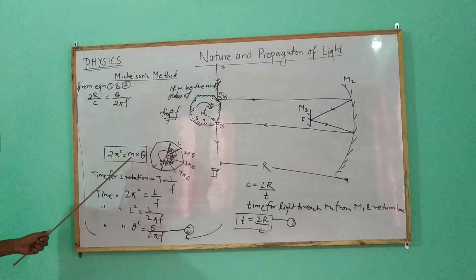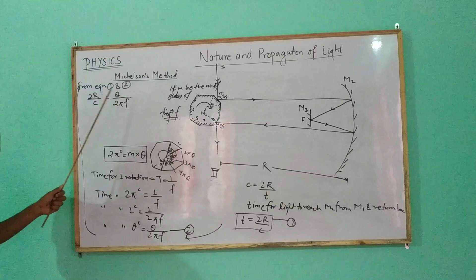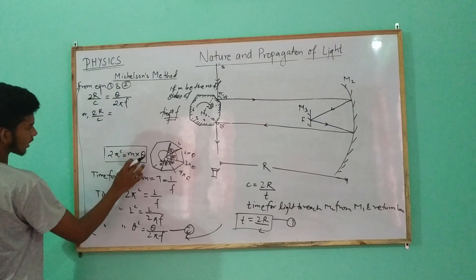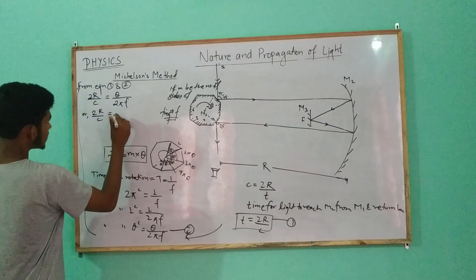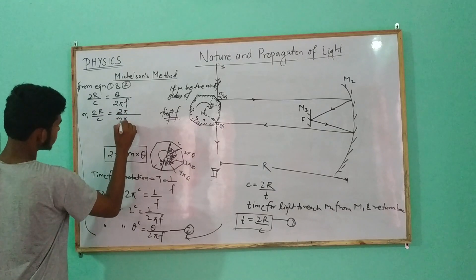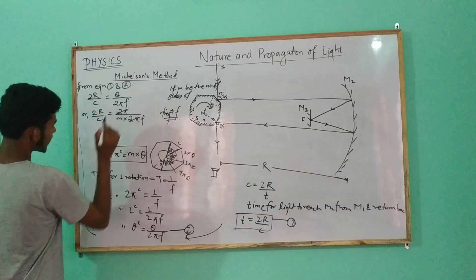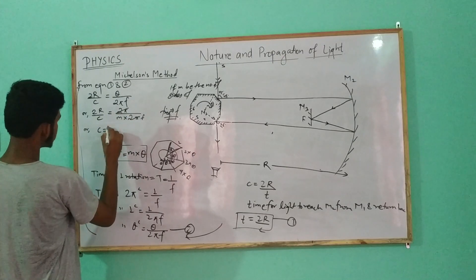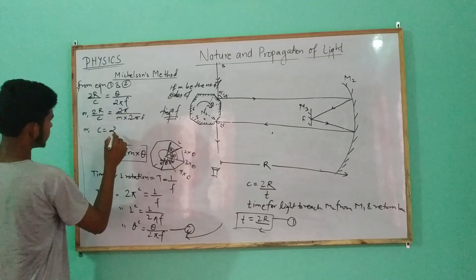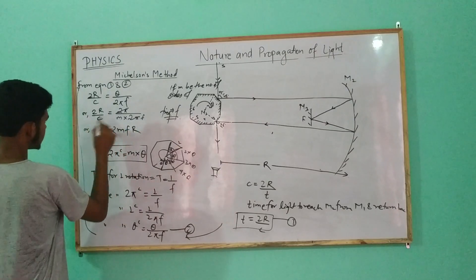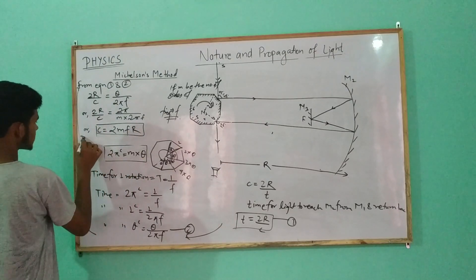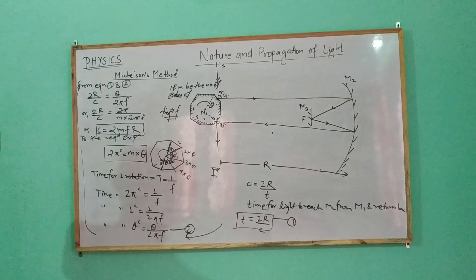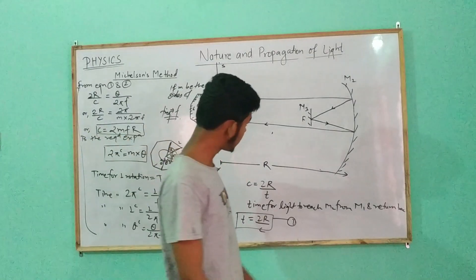From equation 1 and equation 2: 2r by c equals theta by 2 pi f. Since 2 pi by n equals theta, substituting gives us 2r by c equals 1 by nf, so c equals 2nfr.